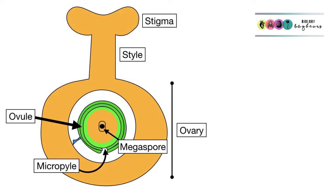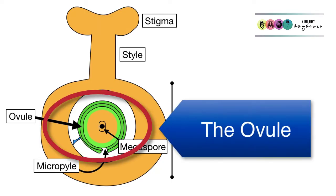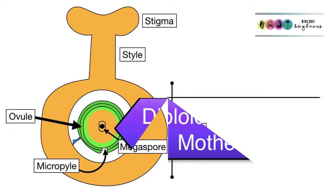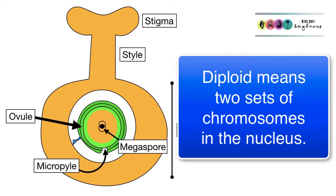In this diagram of the carpel, you can see the ovary, and within the ovary there is the ovule. At the centre of the ovule is the megaspore mother cell, which is diploid, meaning it has two sets of chromosomes in the nucleus of its cell.